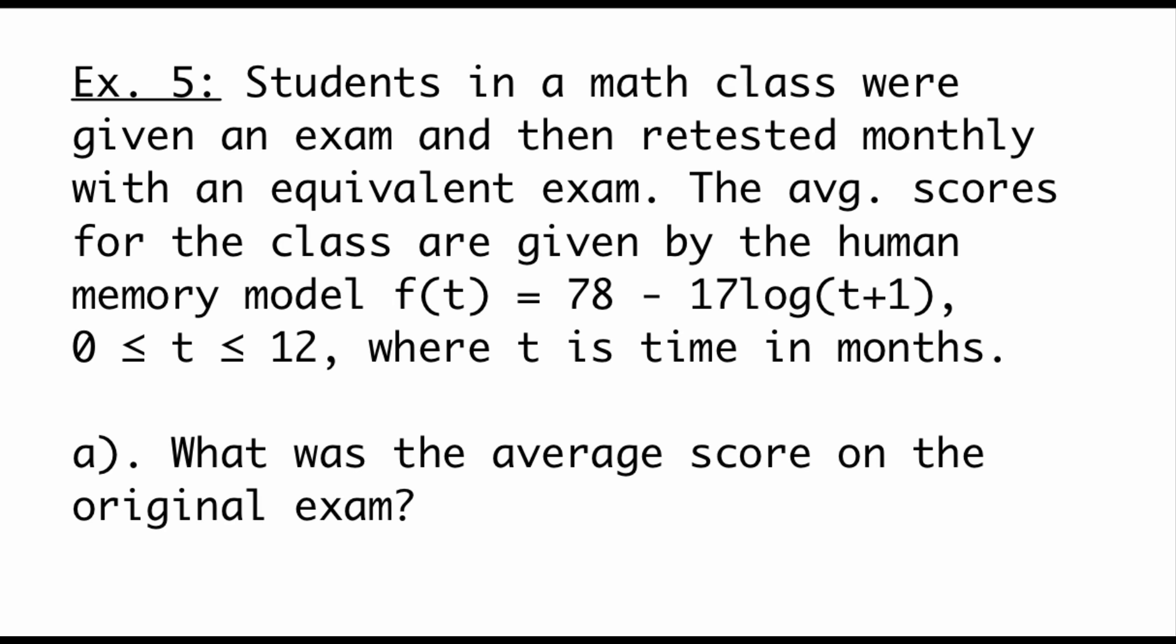The last example in this video is an application example. It says we were dealing with some students in a math class. They were given an exam and then retested monthly with an equivalent exam. The average scores are given by this memory model f of t equals 78 minus 17 log of t plus 1. And we're going to use 0 through 12 for those t values, and those are going to be in months. So first thing we want to do is figure out the average score on the original test. What that means is we're going to be looking at a t value of 0. So all we have to do is plug 0 into this function.